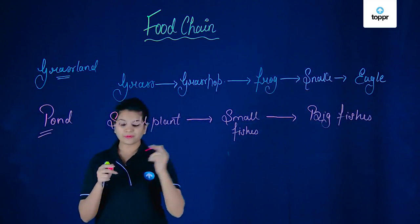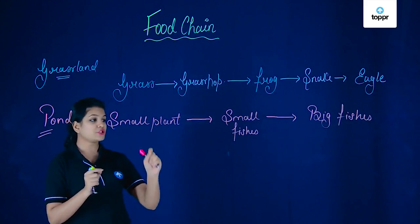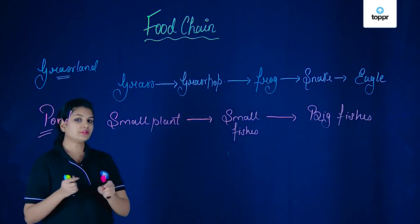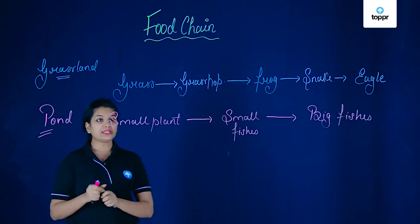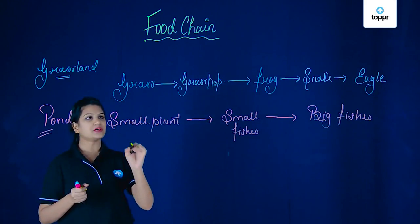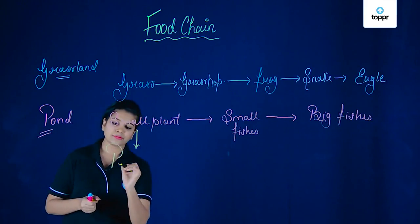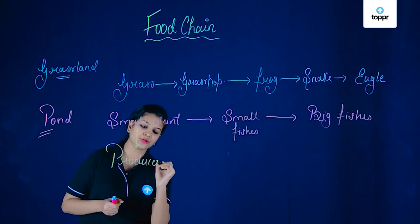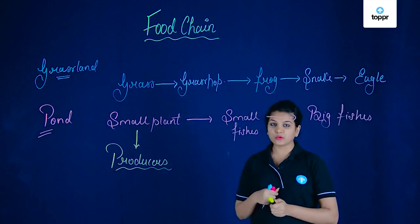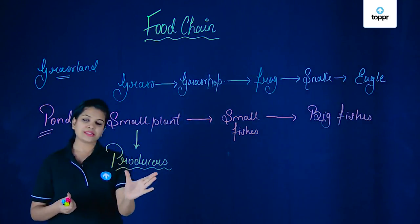This is a chain — this is what you call a food chain — in which you observe that in a particular environment, it is a series of events taking place in which each living organism is obtaining its food. Coming back to our point: in each food chain, you will mainly find that the first level is usually the green plants, and hence we call them producers. Producers are those which can perform photosynthesis and can make their own food, because these are the ones upon which the other organisms are feeding.